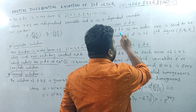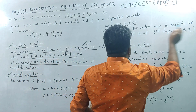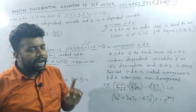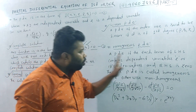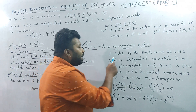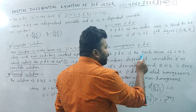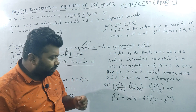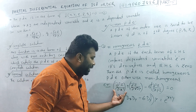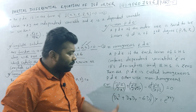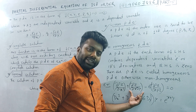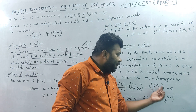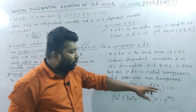The left-hand side contains the dependent variable z. Let's look at the example: del square z by del x square, then del square z by del x del y — that is z with respect to x and y with partial derivative — minus 6 del square z by del y square, giving z with respect to y, equals 0.